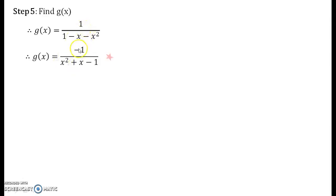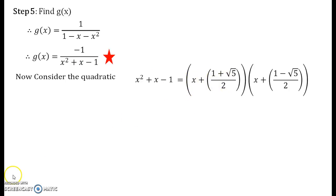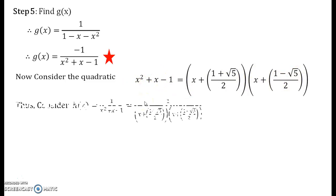We pull out the minus sign from the denominator and shift it into the numerator, giving a form we are more familiar with. Consider the quadratic in the denominator — its factors are (x plus (1 plus root 5)/2) times (x plus (1 minus root 5)/2). These irrational numbers are the roots of the quadratic equation. We call h(x) equals 1 upon (x squared plus x minus 1), which has these factors.